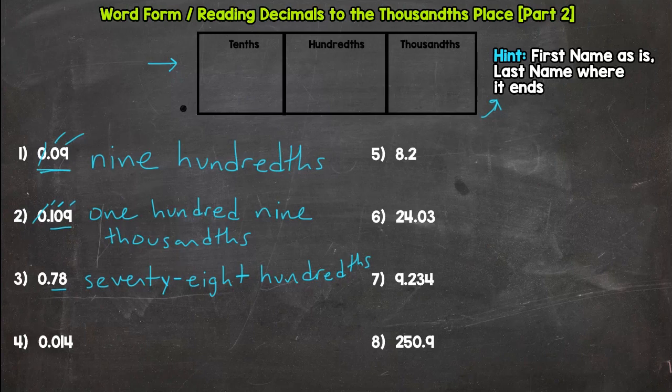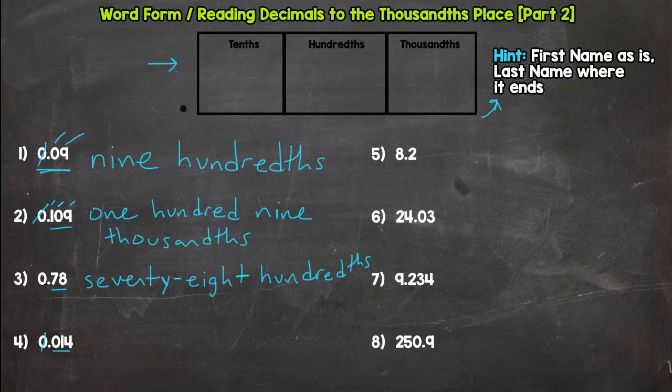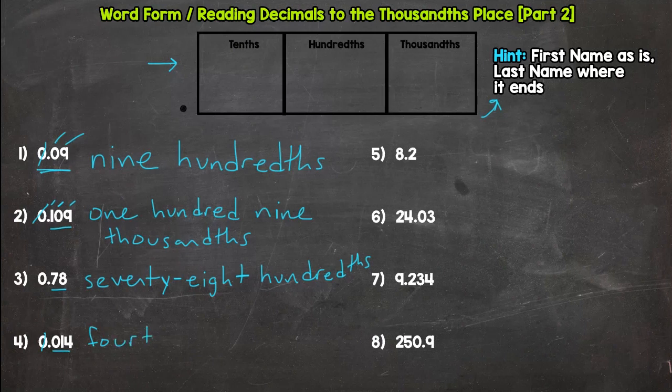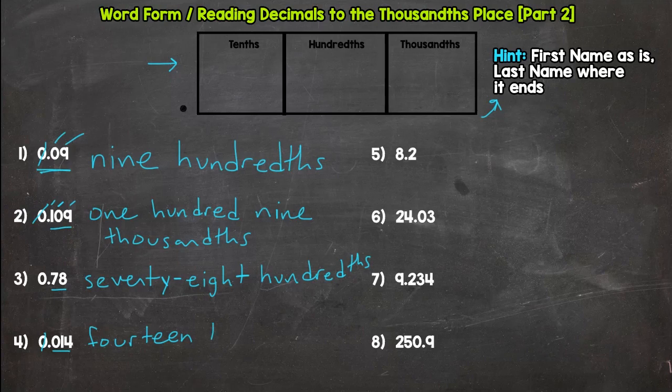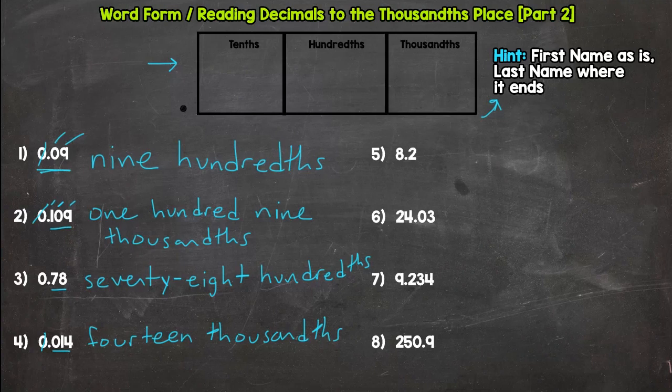And then our last one on this side with no hole numbers, no holes. So read as is. I know it has a zero in front, but it's still a fourteen. And it ends in the thousandths. So there we go. Those are four for four, hopefully.